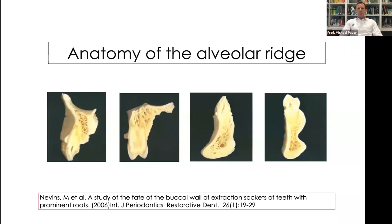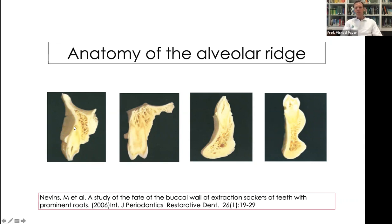Looking at anatomical sections — an upper incisor, a premolar, and a lower incisor — we can see that the surrounding bundle bone is very, very thin, in some cases 200% bundle bone. This thin bundle bone is found especially in the aesthetic zone where we do not want it to be thin. We can predict quite reliably that when we extract a tooth in the aesthetic zone with a thin biotype, we will very probably lose up to 50% of the crest, and this happens within the first 6 to 12 months.